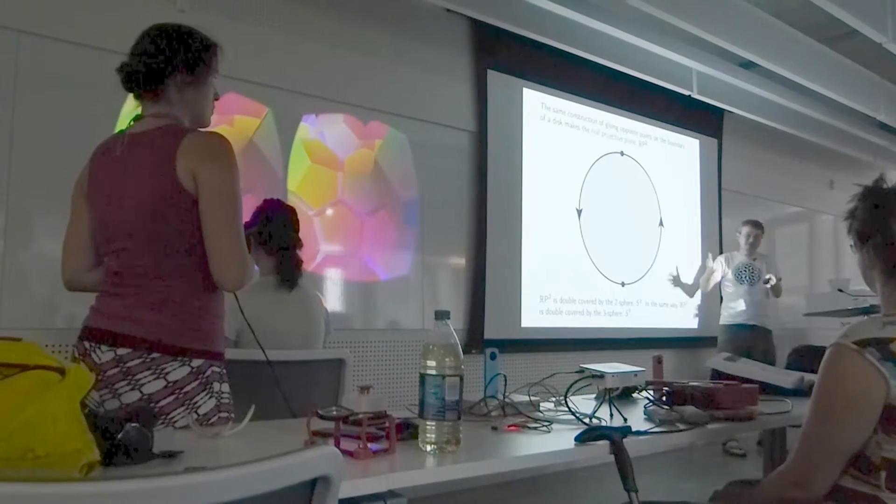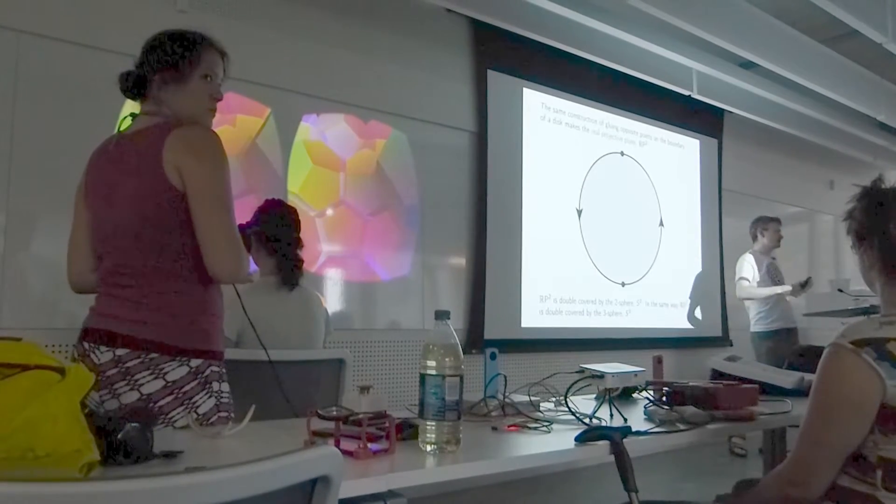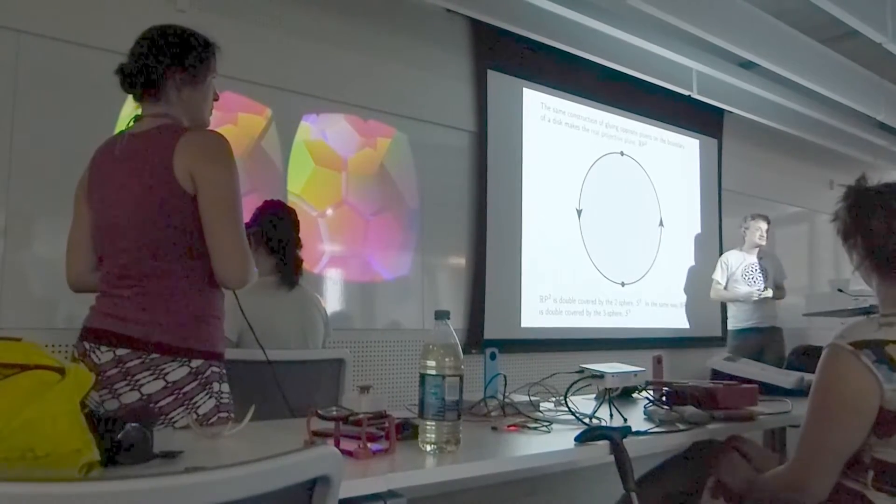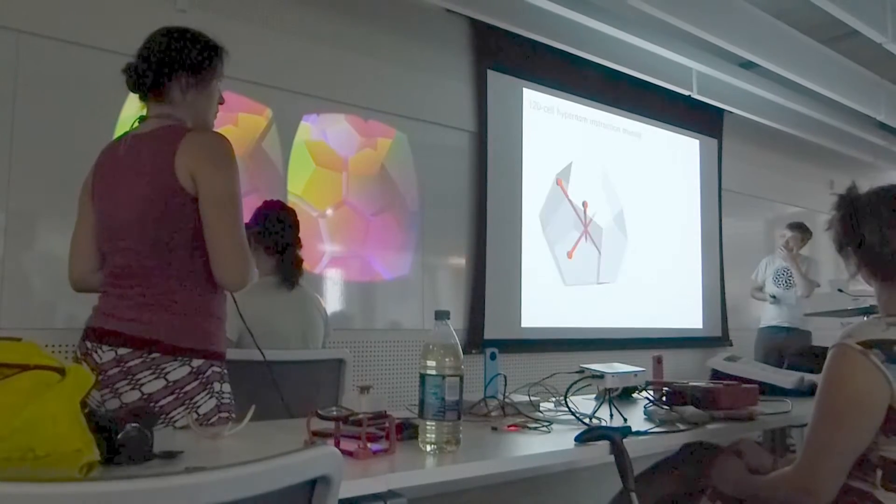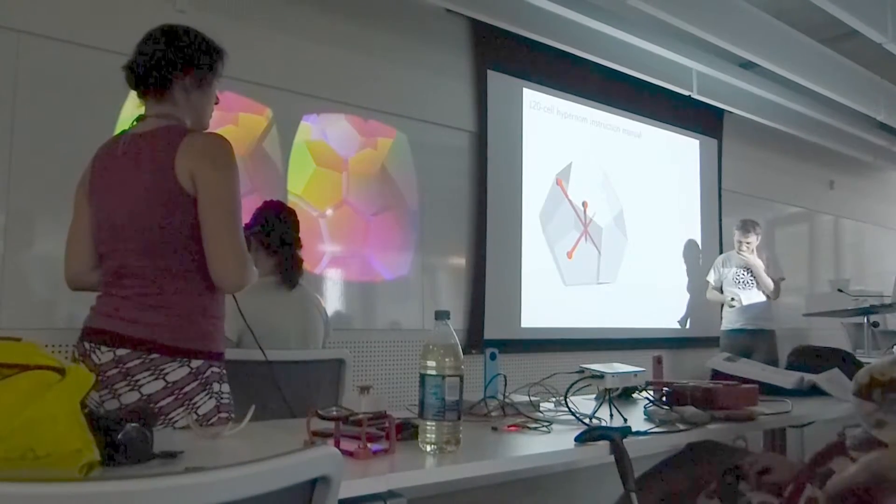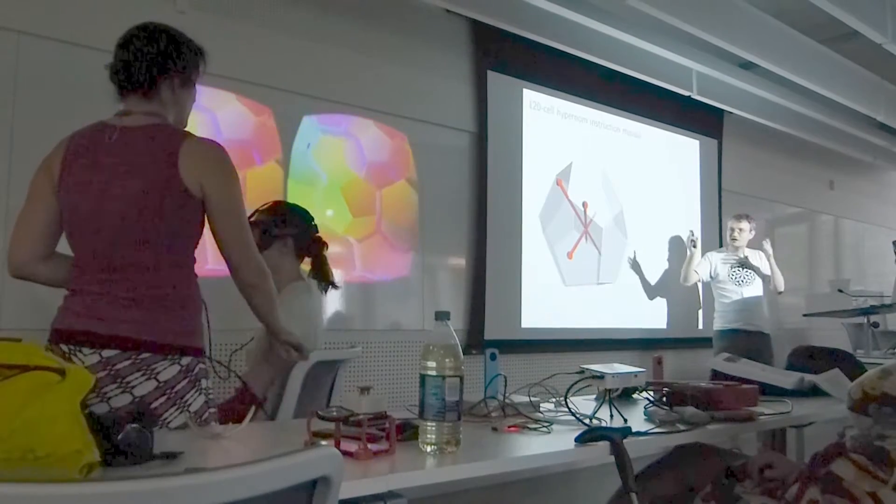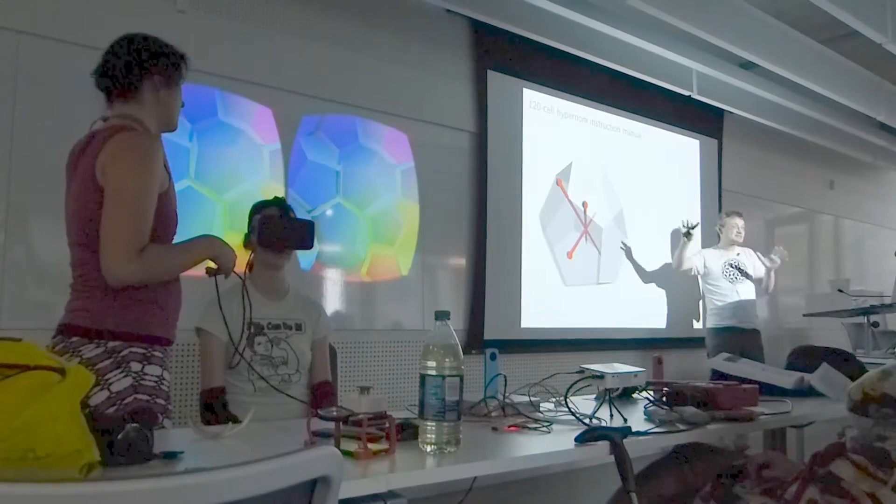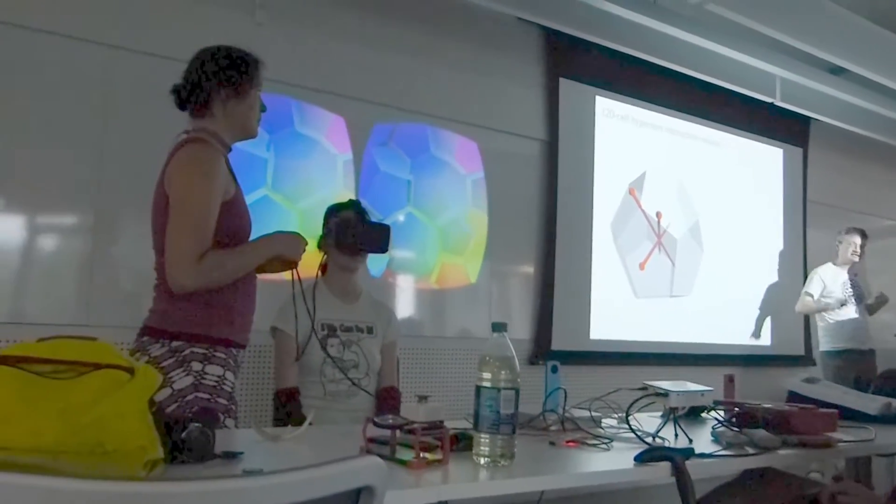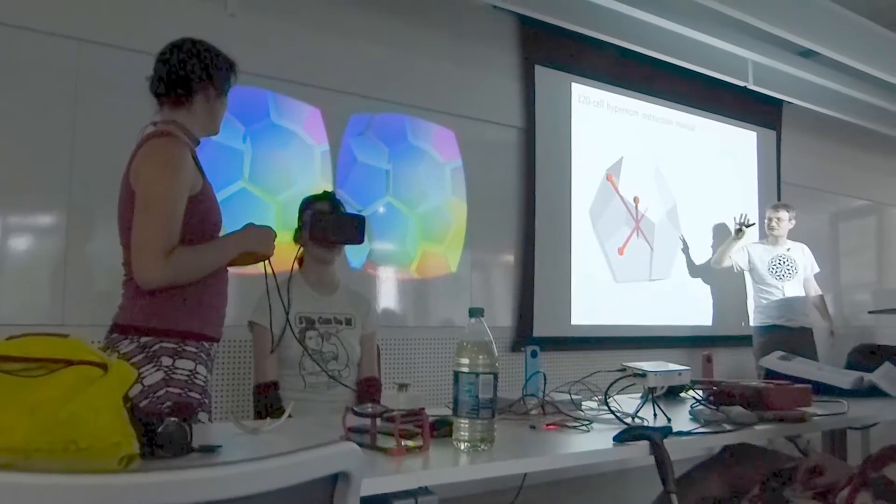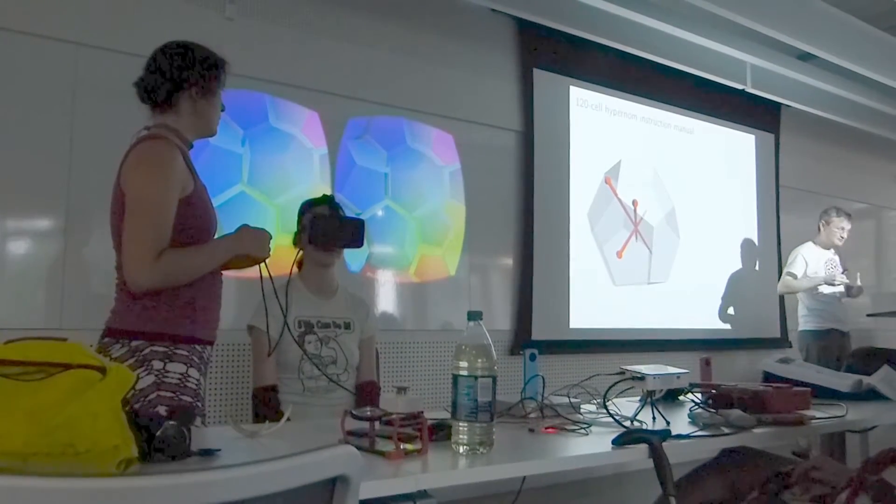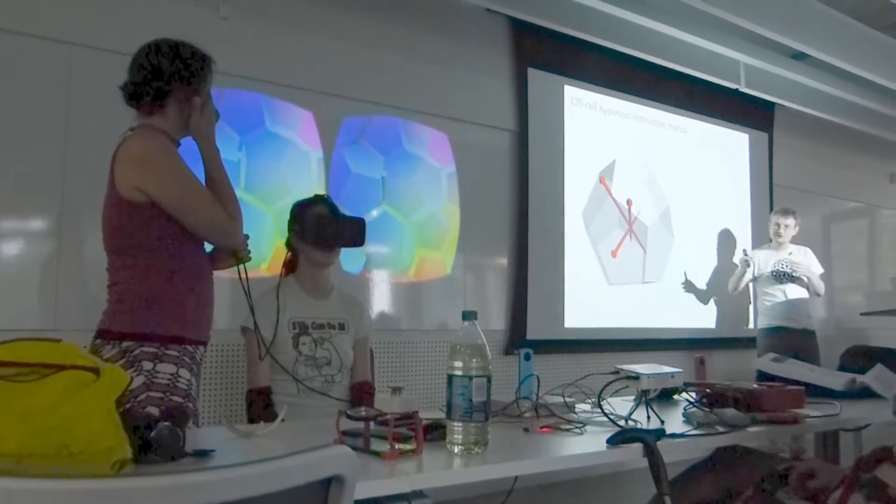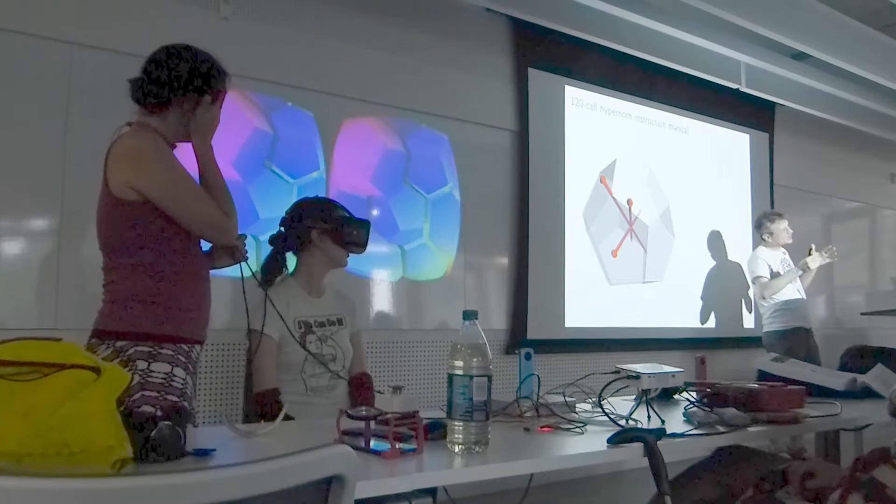In the same way, RP3, the space of orientations, is double-covered by S3. People may be aware I've done a lot of stuff with S3 and visualizing things in S3 by projecting them down to R3. So what is HyperNOM doing? You're moving around your head orientation, that's moving you in RP3, but for the purposes of having a space to wander around in, it turns out to be better to be moving around in S3. Vi is moving through the space by moving her head around.